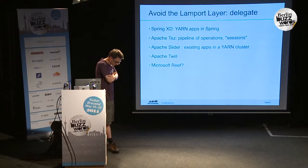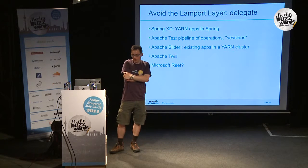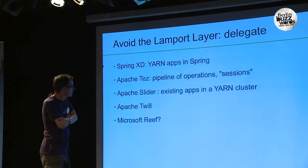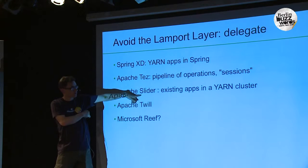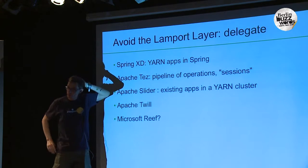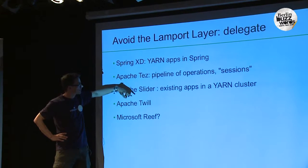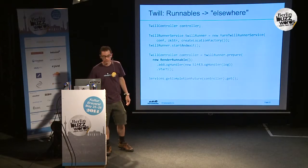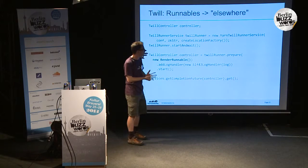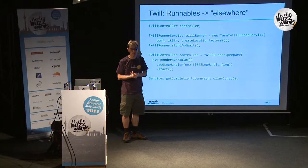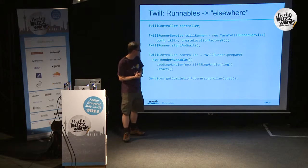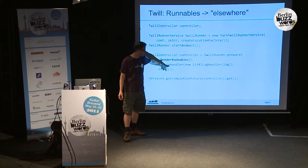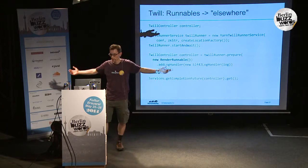Try to avoid doing as much of the work yourself. Application masters are complicated, and the best way to avoid them is to let somebody else do the heavy lifting. There are various projects working on this — I'm working on Slider to run existing apps, colleagues are doing Tez, which is like the Microsoft Dryad pipeline model. Apache Twill is going to be spoken about next, and I'll give a quick demo of it here. Twill is probably the simplest way to run a YARN application — it takes what looks like a normal Java Runnable and runs it elsewhere. This is me launching a YARN application master from client code: I create some Twill things, create an instance of my runnable class, add something to capture logs, and just run it in the cluster.